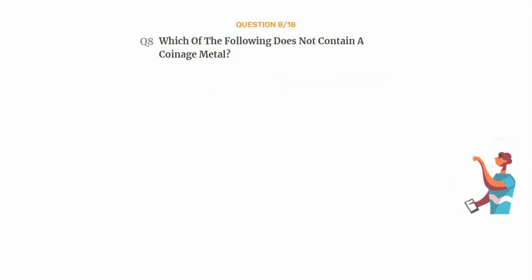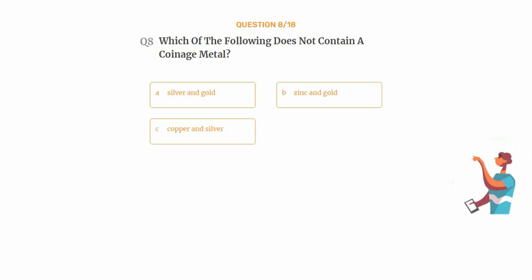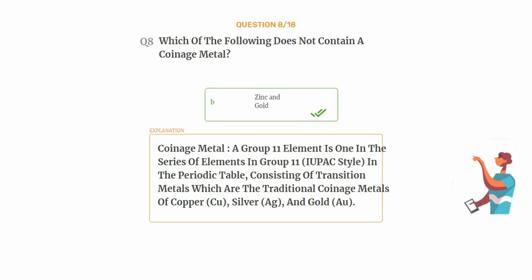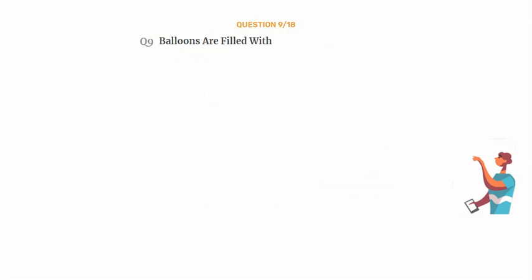Question number eight: which of the following does not contain a coinage metal? Option A: silver and gold, option B: zinc and gold, option C: copper and silver, option D: copper and gold. The correct answer is option B: zinc and gold. Coinage metals are Group 11 elements in the periodic table — transition metals which are the traditional coinage metals: copper (Cu), silver (Ag), and gold (Au).